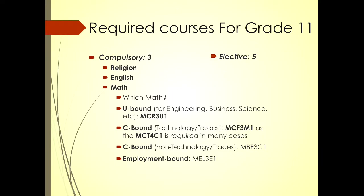Required courses for grade 11 on your option and advice sheet are addressed in question number three. In grade 11, you only have three compulsory credits that need to be earned — and this is with the assumption that you are on track and have not failed any courses considered compulsory. Otherwise, we need to make up for those through summer school or in first semester of grade 11. And then the fun thing is you get five elective courses.